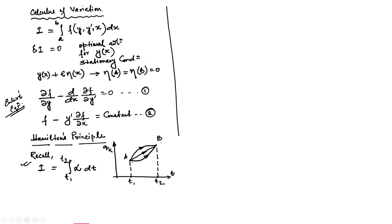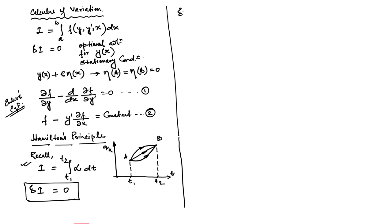If I draw the schematic diagram, we have a time axis with two time points t1 and t2. At t1 the particle is at position a, and at t2 it is at b. This is our generalized coordinate q_k. Hamilton's principle tells us that the first variation over this action integral is equal to 0.